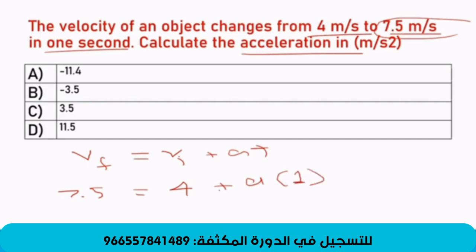So, what we will do? A will equal, we need to move this with minus. It'll be 7.5 minus 4 over 1. Good job, Ahmed. So, it'll be, good job, guys. Well done. 3.5. Yes. Exactly. 3.5 meter per second squared.